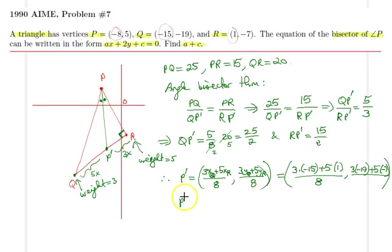As a result, P prime is simply equal to minus 5 and minus 23 over 2. Now that I know the coordinates of both P and P prime, I can easily find the equation of this line, and it turns out that the line will have the equation of 11x plus 2y plus 78 is equal to 0.